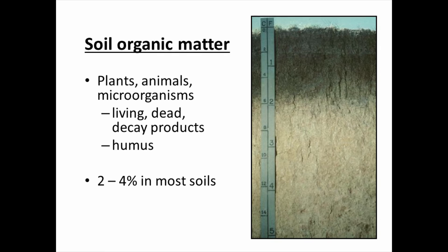Soil organic matter is another chemical property. It is the living, dead, and decay products of plants, animals, and microorganisms in the soil, giving the soil its characteristic brown to black color. A molisol associated with prairie plants can have a deep, thick organic layer down to two feet. Most soils contain about two to four percent organic matter, which can vary by landscape position and management. Though a small percentage, organic matter is a very important property for soil quality in gardening.